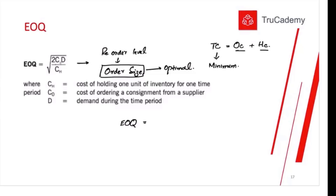In ordering cost and holding cost, we do not consider the purchase cost, because it's irrelevant — whatever your order size, you have to pay the per-unit purchase price anyway. But ordering cost and holding cost are affected: if you place big orders, your ordering cost will be lower and your holding cost will be higher.